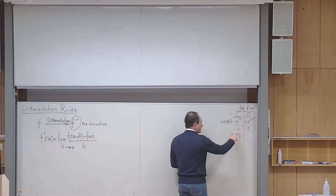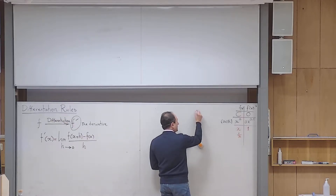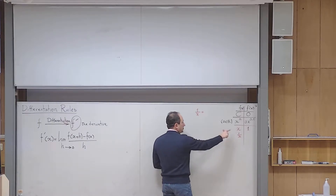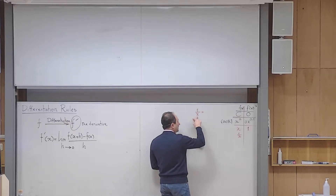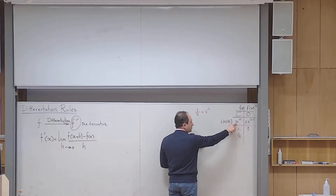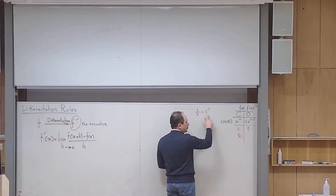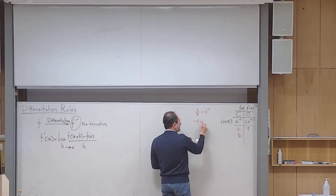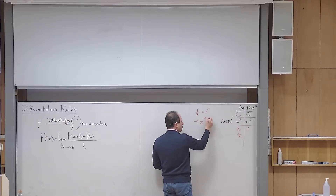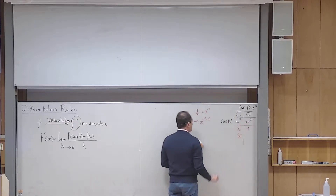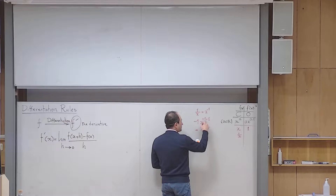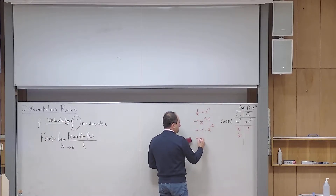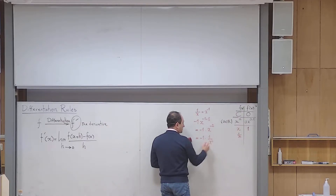Another special case: what is the derivative of 1/x? You write it as x^(−1), then the exponent goes down: −1·x^(−2), which equals −1/x². These red formulas are not in the formula sheet, so if you don't have them memorized you can derive them, but it takes time. I recommend keeping them in memory.